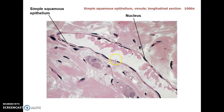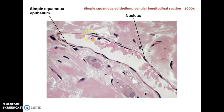This is simple squamous epithelium that you can see here lining a venule, a very small blood vessel. These are red blood cells inside the blood vessel. It veers off the screen here, which is why it looks like it ends right there. The simple squamous epithelial cells are these cells here lining the blood vessel on either side — you can see the dark stained nucleus, one cell, another cell.